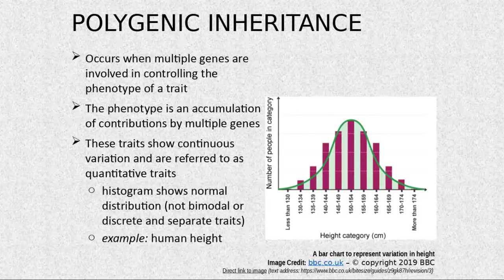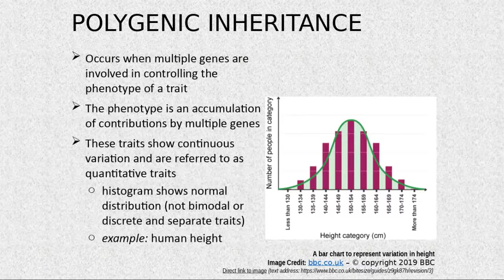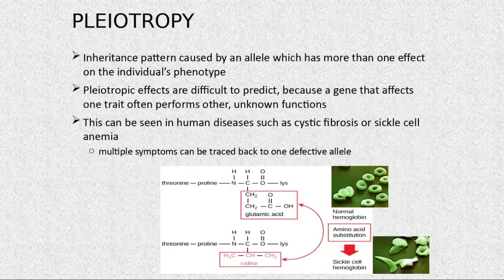Another pattern that does not meet Mendel's criteria is pleiotropy. Pleiotropy is an inheritance pattern in which one allele causes multiple effects on the individual's phenotype.